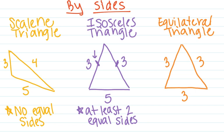The sides that have those little tick marks means that this side is going to be equal to this side, because they both have those little tick marks. Those are tick marks that show equality or congruency. So if you see those tick marks, that means that those two sides are equal.